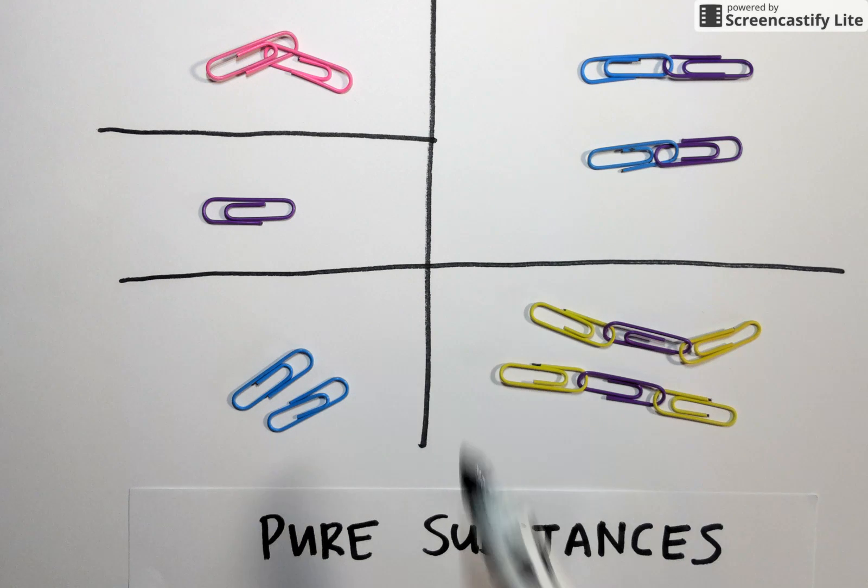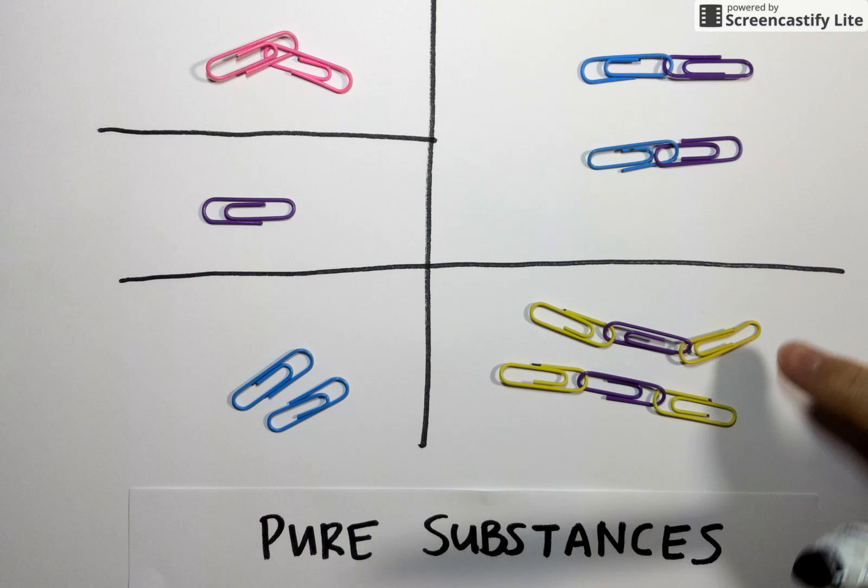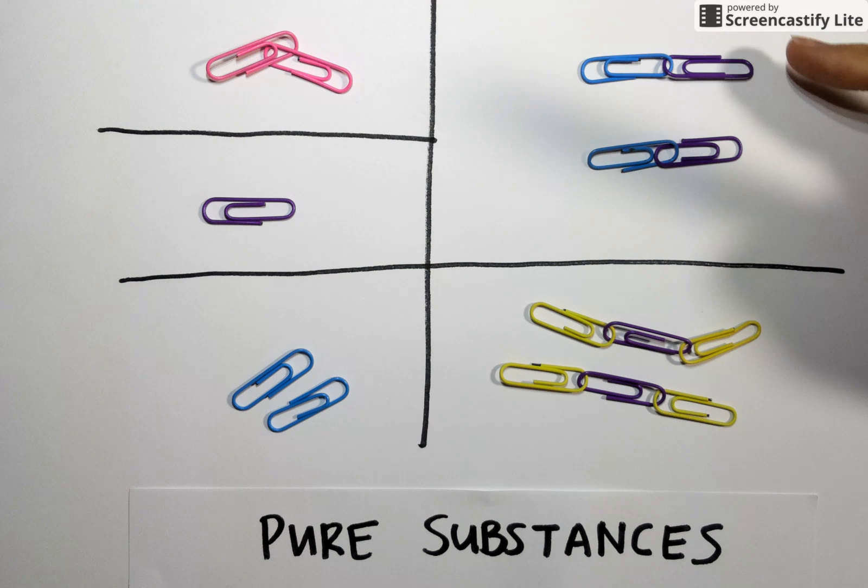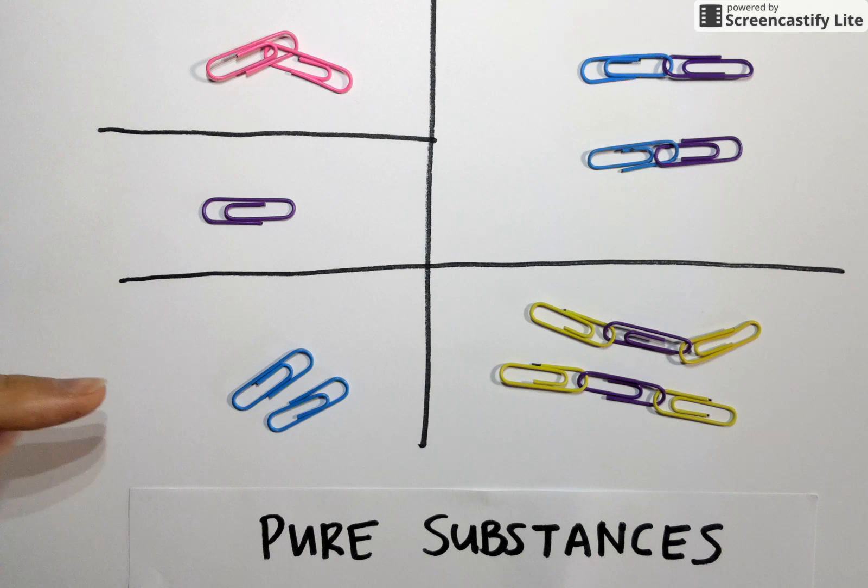In this box, we have particles that look the same, but they're made of atoms that look different. The same is true up here. Particles that look the same, but individual atoms linked together that look different. Over on the left-hand side of your screen, each particle again looks the same, but so do all of the atoms within each box.